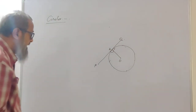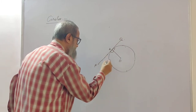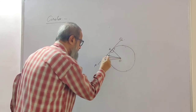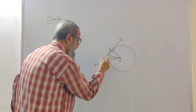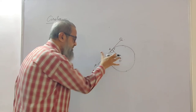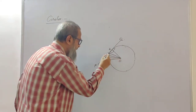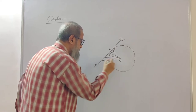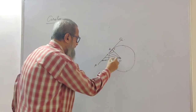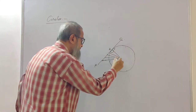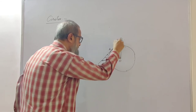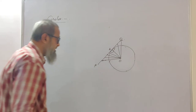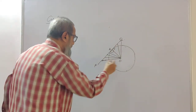This can be proved as follows. Take any number of points on the tangent line. As you join from center O to these points and move closer and closer to A, the distance is going on decreasing. As we move away from A, the distance increases again. So OA is the shortest distance between the line PQ and the center of the circle.